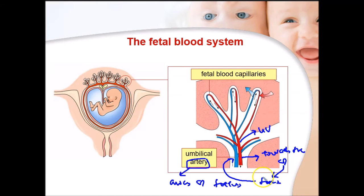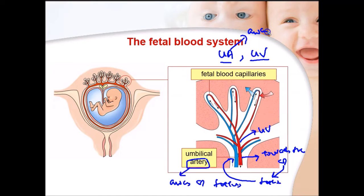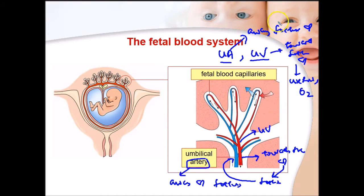The umbilical artery carries blood away from the fetus towards the mother — it carries harmful substances and waste products like carbon dioxide. Blood coming from the mother towards the baby carries a lot of oxygen and is rich in nutrients. A common exam question asks you to distinguish between the umbilical artery and umbilical vein: the umbilical artery is away from the fetus and carries CO₂ and waste products; the umbilical vein is towards the fetus and carries oxygen and useful substances.